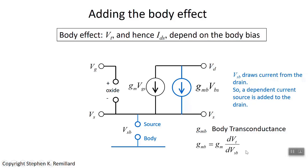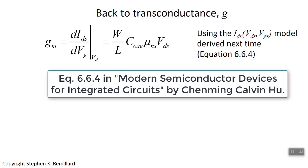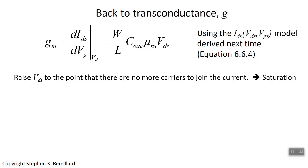What we're going to do in the next lecture is come up with an expression for I_DS, the drain-source current, as a function of the drain-source voltage and the gate-source voltage. It's going to be determined by the charge in the inversion layer. For now, I'll reference equation 6.64, where the mutual transconductance derived from that expression is a simple expression — but we're going to derive it next time. The mutual transconductance is not a constant: as you change the voltage between drain and source, it changes pretty much linearly, with a little nonlinear effect caused by the electrical oxide capacitance.